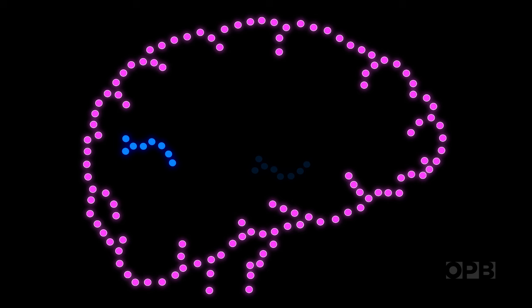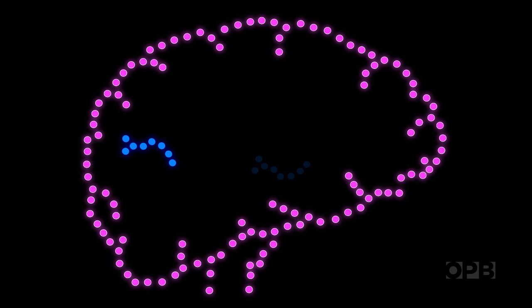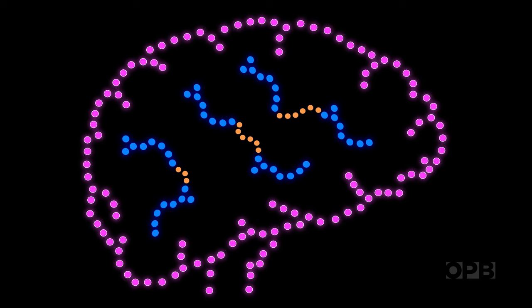Our brains are full of nerve cells called neurons. And when we learn, our neurons create connections between each other. The points where the neurons connect are synapses.